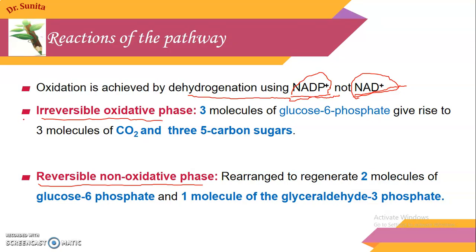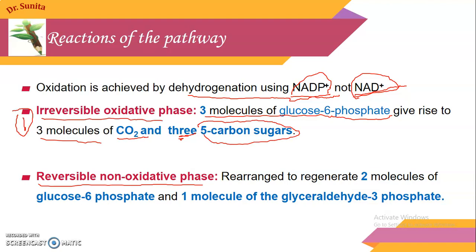In the first phase — the irreversible oxidative phase — 3 molecules of glucose-6-phosphate give rise to 3 molecules of a 5-carbon sugar, that is ribose-5-phosphate.